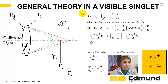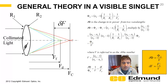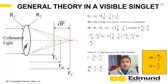Starting in terms of power, the change in power versus wavelength is proportional to the green power divided by the Abbe number. Or in terms of focal length: the change in focal length from blue to red equals the green focal length divided by the Abbe number. Very simple equations.